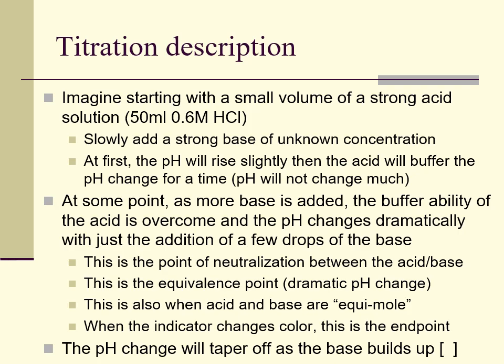But at some point, as you add more and more base, you overcome the acid's buffering ability and all of a sudden the pH will change very dramatically from low numbers to high numbers. If you're measuring it with a pH meter, you can see the numbers change very dramatically with a drop or two of the base being added. This is the point of neutralization, the equivalence point, where we see that dramatic pH change and where acid and base are in equimolar amounts. When the indicator changes color, we know we've reached the end point. If we continue to add base, the pH continues upward toward basic numbers, tapering off as the base builds up.